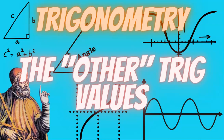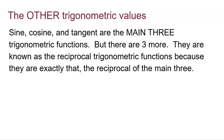So what are the other trig values? Sine, cosine, and tangent are the main three trigonometric functions, but there are three more. They are known as the reciprocal trigonometric functions because they are exactly that — the reciprocal of the main three.